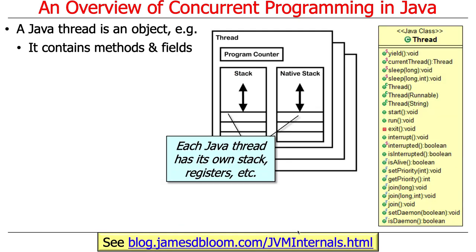What does that mean pragmatically? It means it has methods and fields. Each Java thread has certain resources that are unique to it: it has its own stack, its own registers, its own instruction pointer, its own thread-local storage, and so on. Here are some of the methods that are exposed — basically that's what it means to be an object in this context.